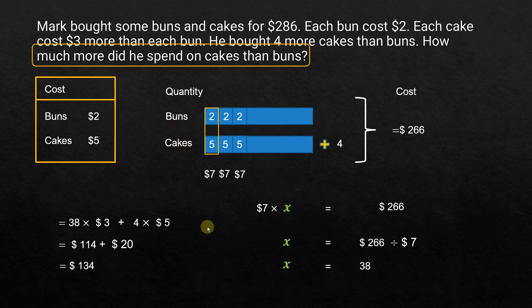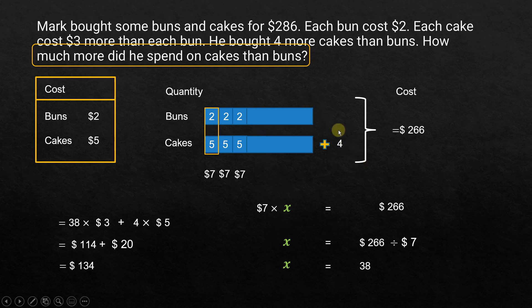Hope this was helpful. Another method would be: 2 times 38 gives the cost of buns; 5 times 38 plus 4 times 5 gives the total cost of cakes; subtracting them gives the same answer. But the method we used is shorter because we already know the difference per item and the number of items.